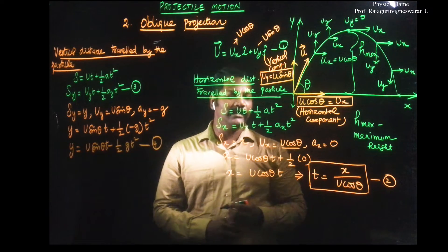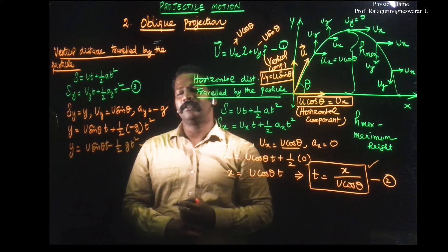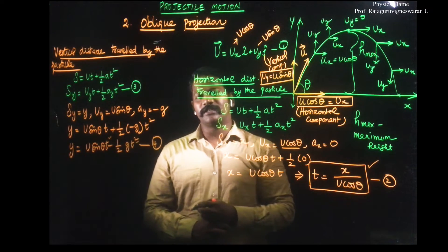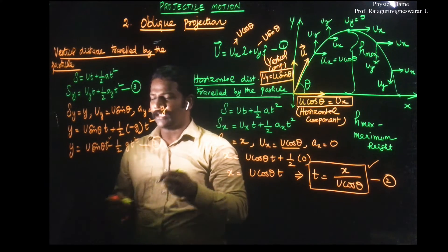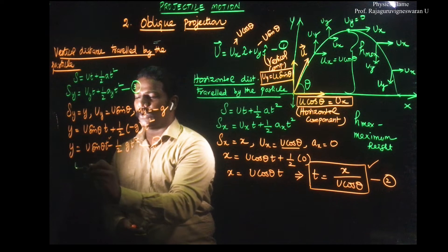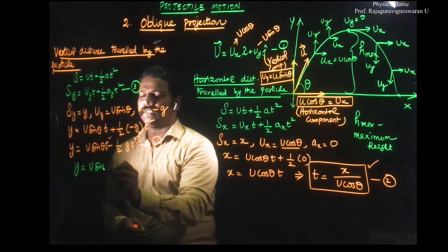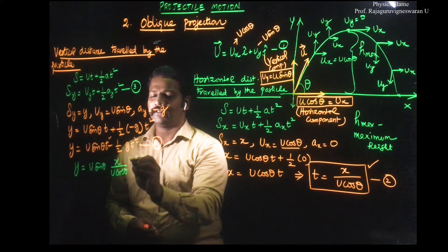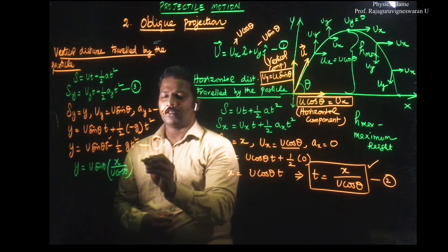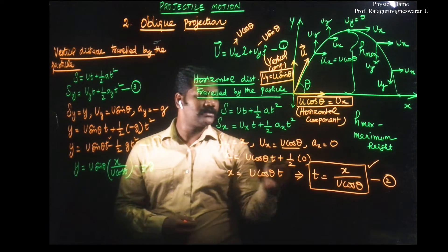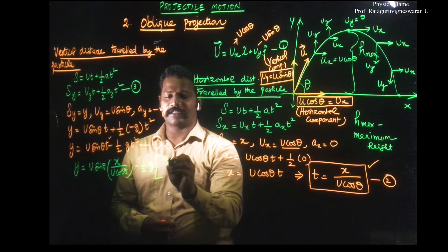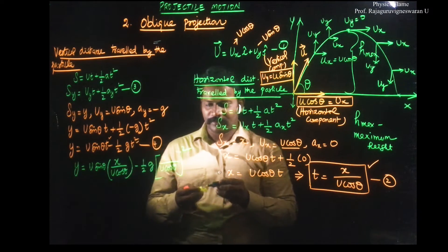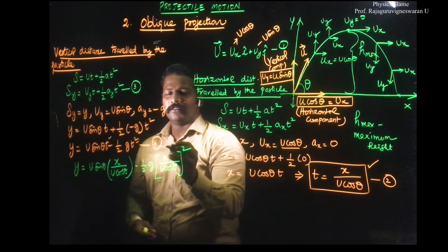Now, if we substitute the value of t — from equation 4, t is equal to x divided by u cosθ — and substitute into equation 3: y = u sinθ · (x / u cosθ) − ½g · (x / u cosθ)². Substituting and squaring gives the simplified form.